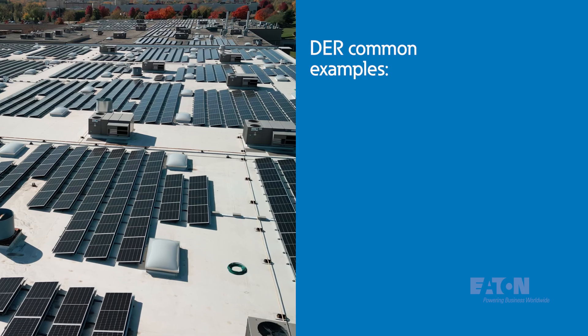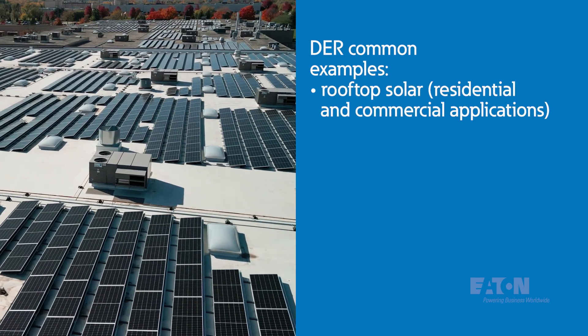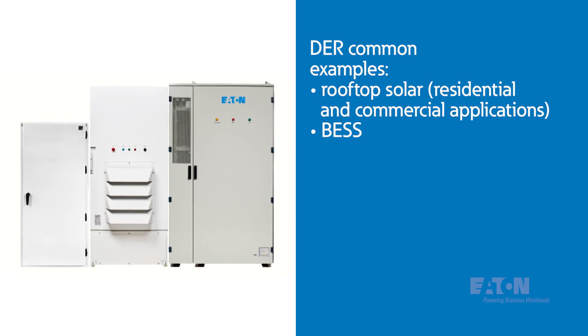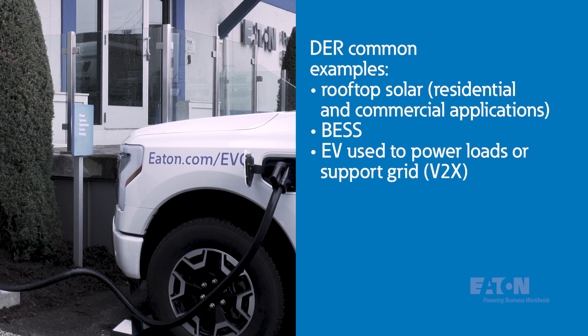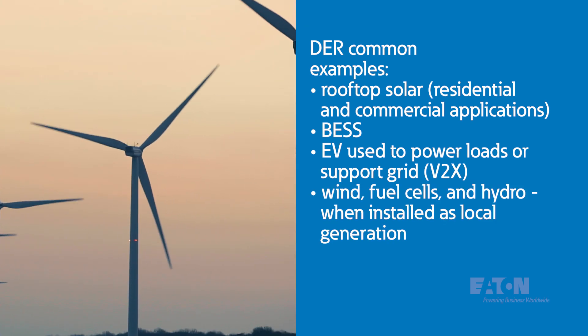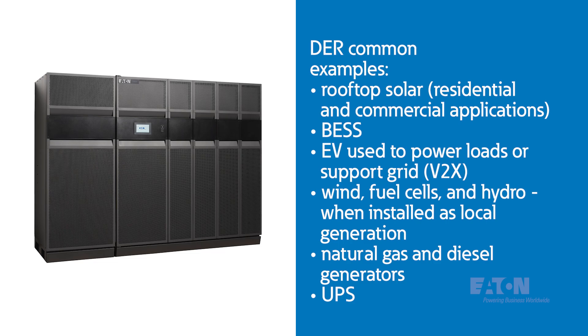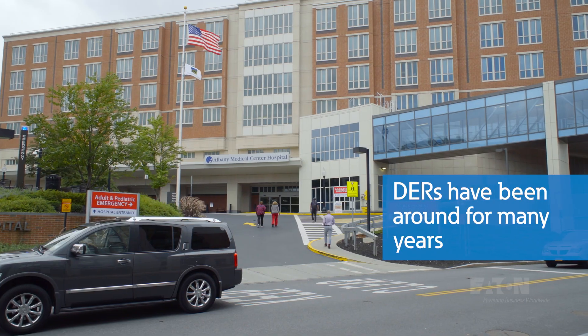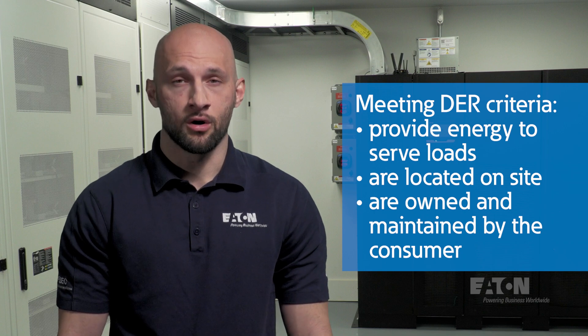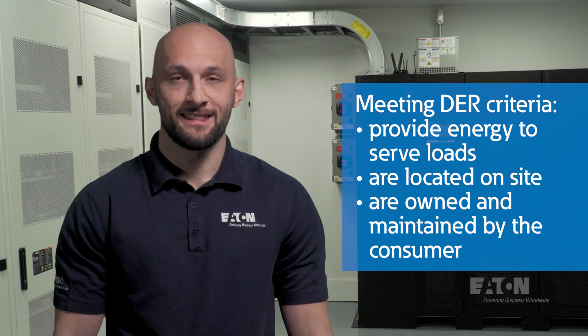Some common examples of DERs are: rooftop solar installed on a residential or commercial building; battery energy storage systems, or BESS; electric vehicles when used to power loads locally or contribute power back to the grid, often referred to as V2X; wind, fuel cells, and hydro when installed as localized generation; natural gas and diesel generators; and uninterruptible power supplies, or UPS. Generators and UPSs have been used in hospitals and data centers as backup power solutions for many years. Not all DERs are new — some have existed in power systems for decades. However, as more consumers consider sustainability, they are moving towards renewable energy sources and battery solutions like solar and bulk energy storage.